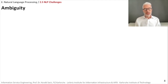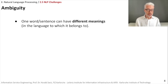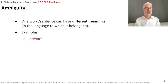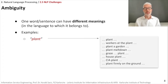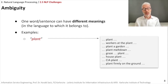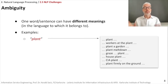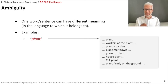Now let's switch to ambiguity — vice versa: one word or one sentence which can have different meanings. Let's start with a single word: 'plant.' By simply using 'plant,' it can have several meanings depending on its surroundings. 'Workers at a plant' gives it a specific meaning like a factory. 'Plant a garden' makes it a verb. 'Plant meltdown,' 'grace and plant,' 'house plant,' 'CIA plant,' 'plant firmly on the ground' — the same letters, but different meanings.